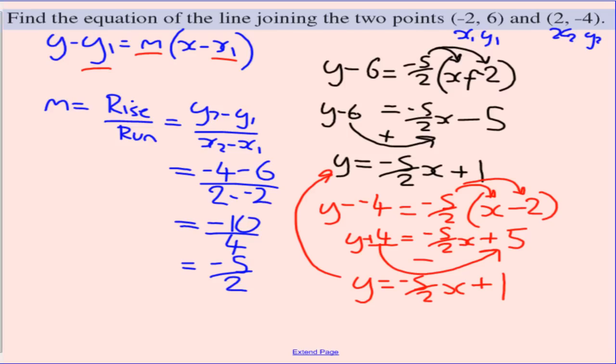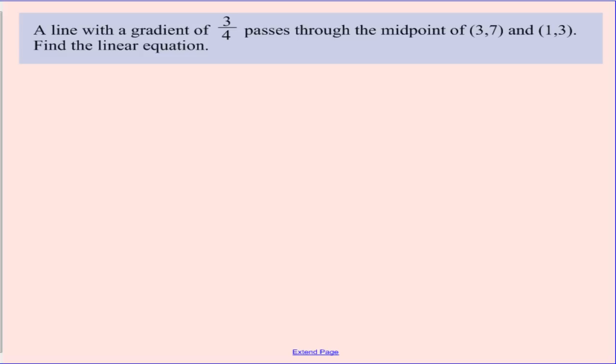Okay, moving on to our last example, getting just a little more unnecessarily difficult, but nonetheless more challenging. So a line with a gradient of 3 quarters passes through the midpoint of 3, 7, and 1, 3. Find the linear equation. So in this case, we are given the gradient, but we're only given information to find the coordinate on our line. So we're given the fact that our coordinate we need is the midpoint of these two here. So we're going to have to go ahead and find that coordinate.